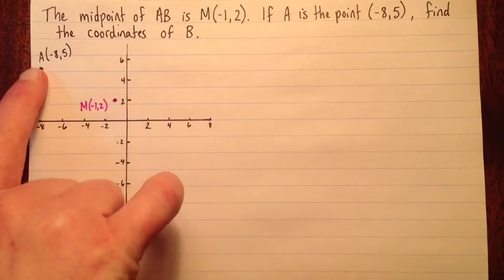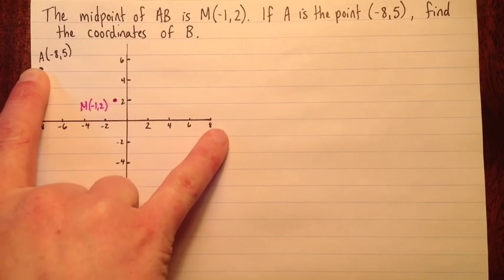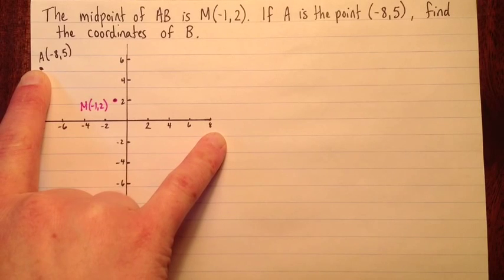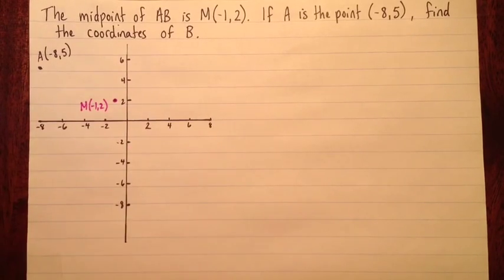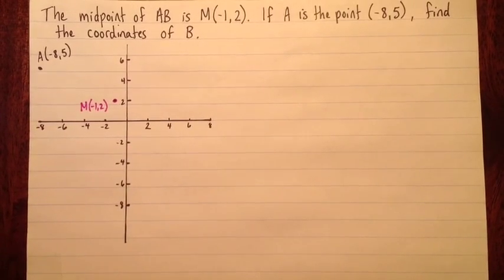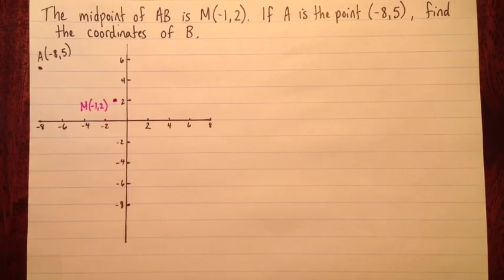So we know one of the endpoints and we know the midpoint, so we know that the other point should be somewhere around here. But we're going to use what we know about a midpoint to find the other endpoint. I'm going to do this two ways. The first way I'm just going to do it by looking at the picture and counting things out, and then the second way I'm going to do it with the midpoint formula, and we'll get the same answer both ways.